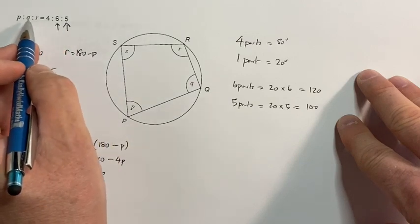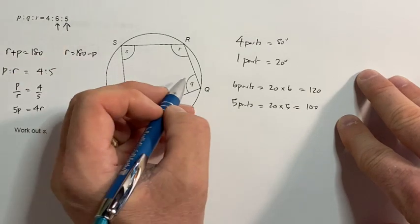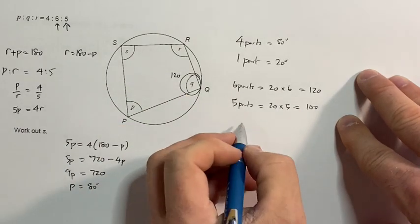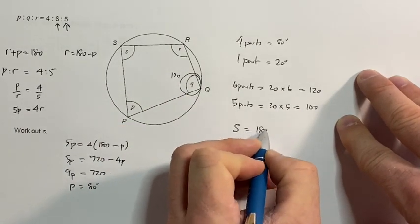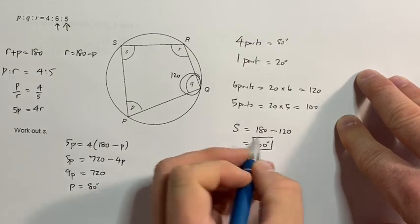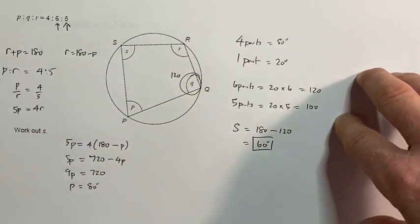Now going back to this, six parts, six parts is for q, that angle there I just established that's 120 degrees. So therefore s must equal 180 take 120. S must be 60 degrees because I'm back to the cyclic quadrilateral.